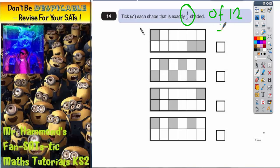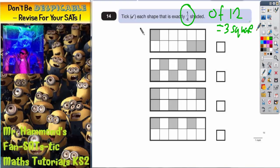So a quarter of 12 is 3 squares. So we just need to now see which shapes have actually got 3 squares shaded. This one's got 3, this one's got 6, this one's got 4 squares shaded, this one's got 3 squares shaded. So the ones with 3 squares shaded are the ones with a quarter shaded.